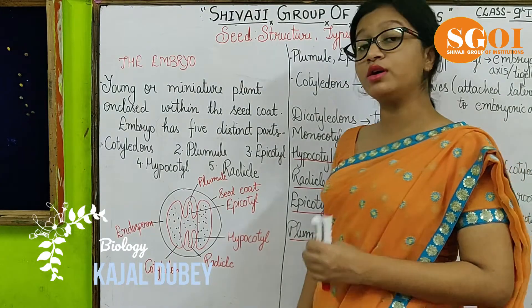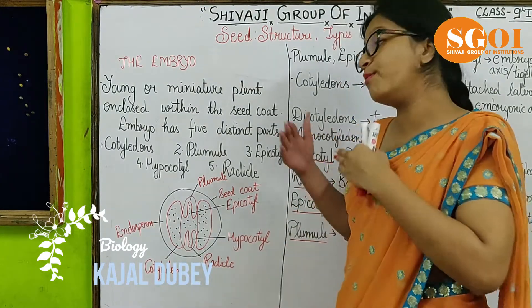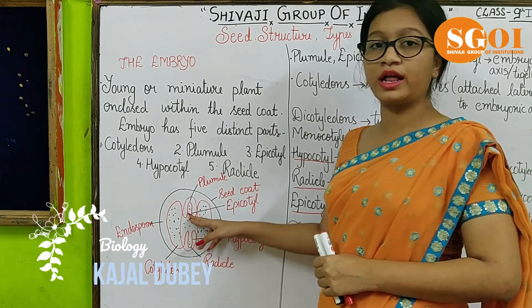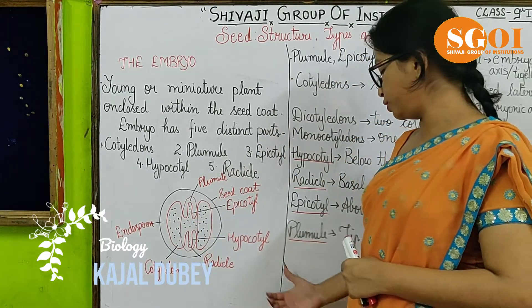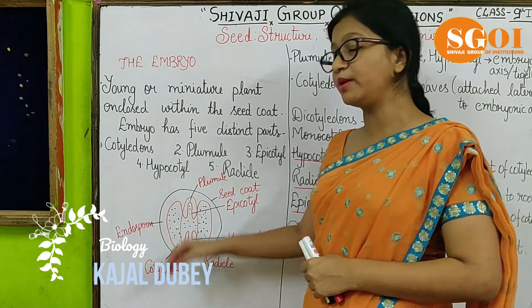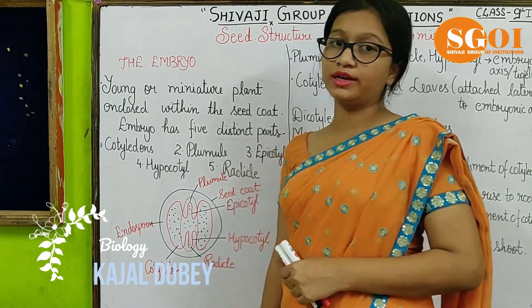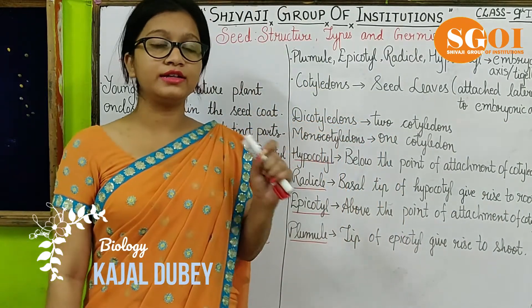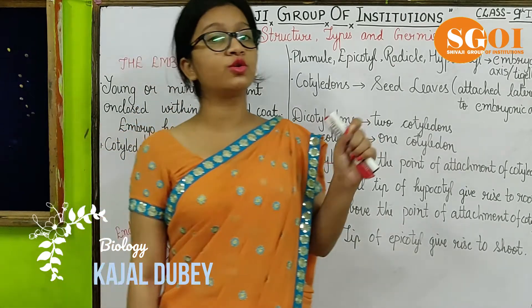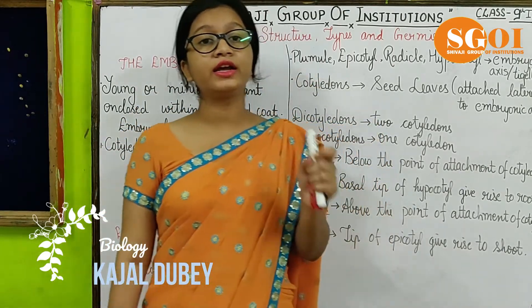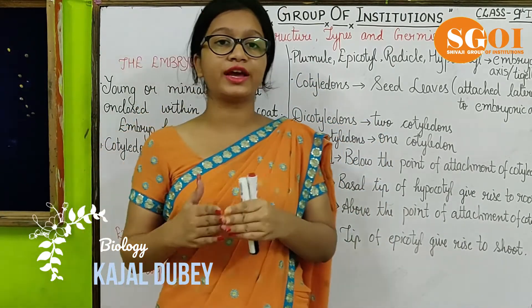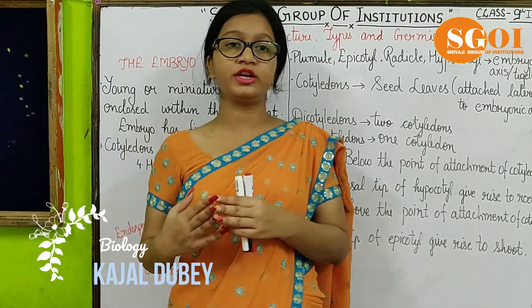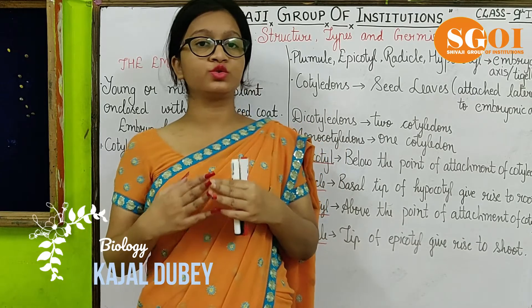Third is epicotyl — epicotyl is present at the above part of the cotyledon. And fourth is the plumule, which is present at the tip of the epicotyl. Two important points: the radicle on germination gives rise to the root of the plant, and the plumule on germination gives rise to the shoot of the plant.